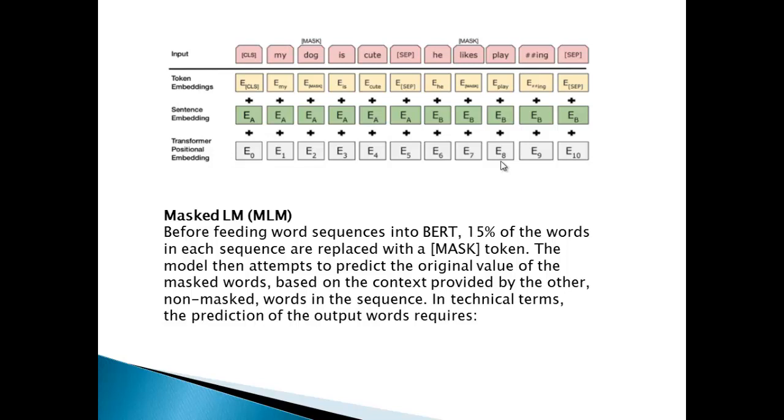How it does this is it reads the previous context, whatever is present, and tries to guess it. In technical terms, the prediction of the output word requires token embedding, sentence embedding, and transformer positional embedding. The token embedding or the tokens are the words which are present in the sentence. Based on every word, an embedding is generated. This is called token embedding.